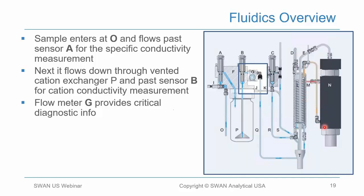The sample goes into the reboiler where it is heated to within 0.5 degrees centigrade of the boiling point temperature. It exits the reboiler, goes through the heat exchanger, is cooled down to 40 to 50 degrees centigrade, flows through the degas conductivity sensor, and then to drain.